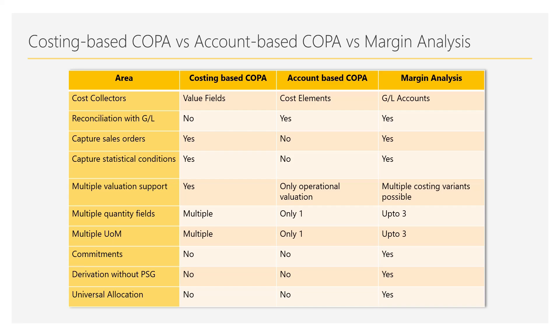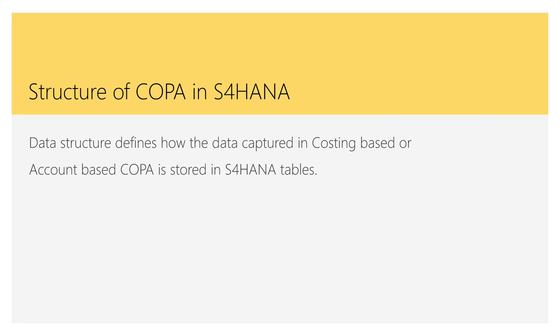Universal allocations are also supported in margin analysis in S4 HANA, which was not the case in either costing-based or account-based COPA in ERP days. This gives a broad comparison of how COPA has evolved from ERP to S4 HANA, and how account-based COPA — which lacked many functionalities in ERP — has now evolved into margin analysis. Please like and share the video to help me post the next one.